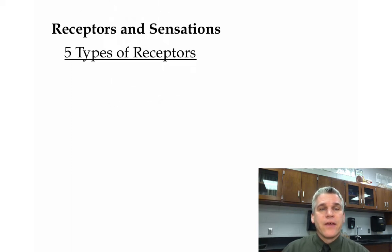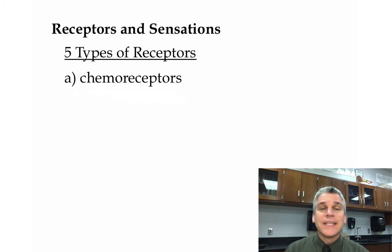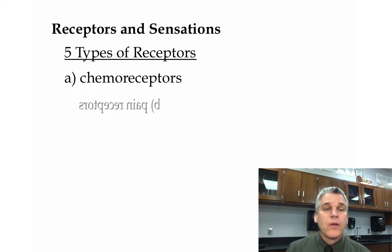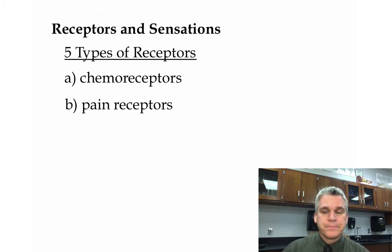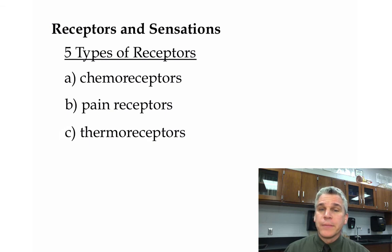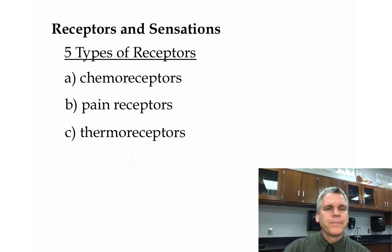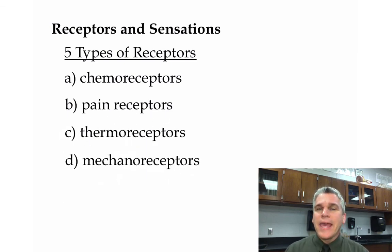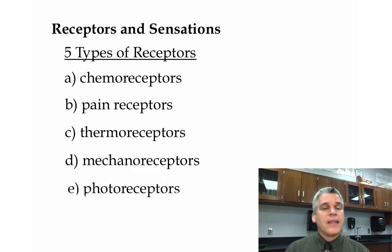There are different kinds. We have chemoreceptors, which are detecting chemicals — found in places like our taste buds or in our nasal cavity. We have pain receptors, which detect heavy pressure. There are thermoreceptors, which detect temperature — hot and cold. There are mechanoreceptors, which detect things like touch. And lastly, we have photoreceptors, which detect light.